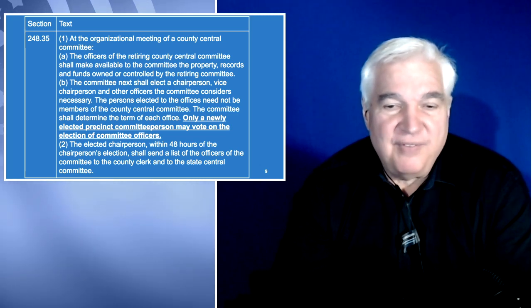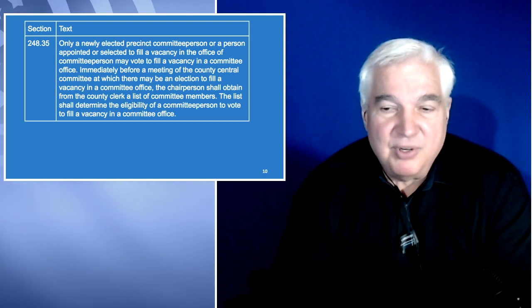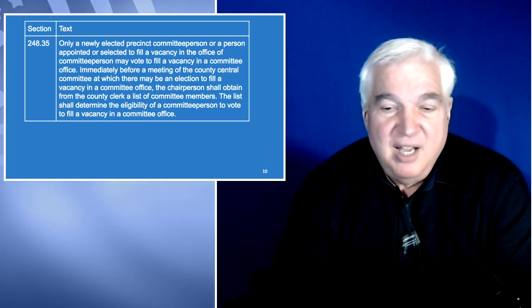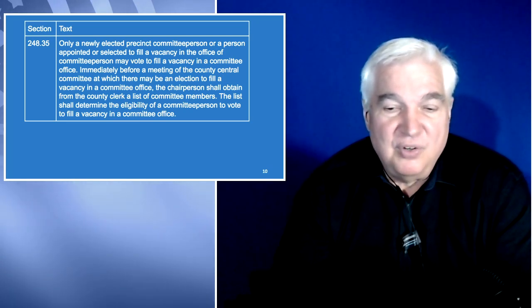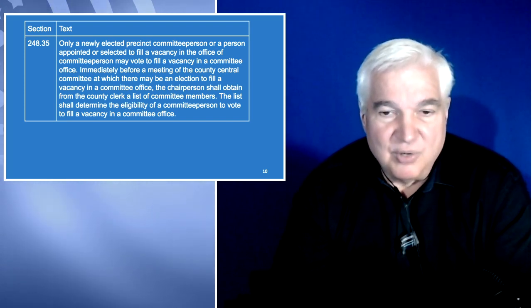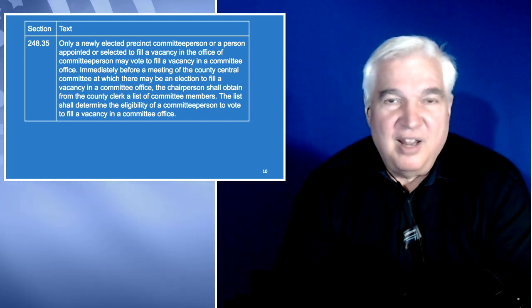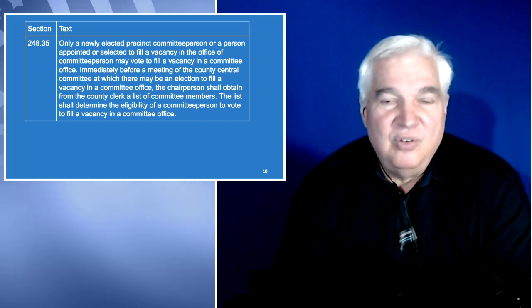Section 248.35 also states that only a newly elected precinct committee person or a person appointed or selected to fill a vacancy in the office of committee person may vote to fill a vacancy in the committee office. Immediately before a meeting at which there may be an election to fill a vacancy in a committee office, the chairperson shall obtain from the county clerk a list of the committee members. That list shall determine the eligibility of the committee person to vote. If anything gets contested and taken to court, they will go to the county clerk for the official list of who is eligible to vote.